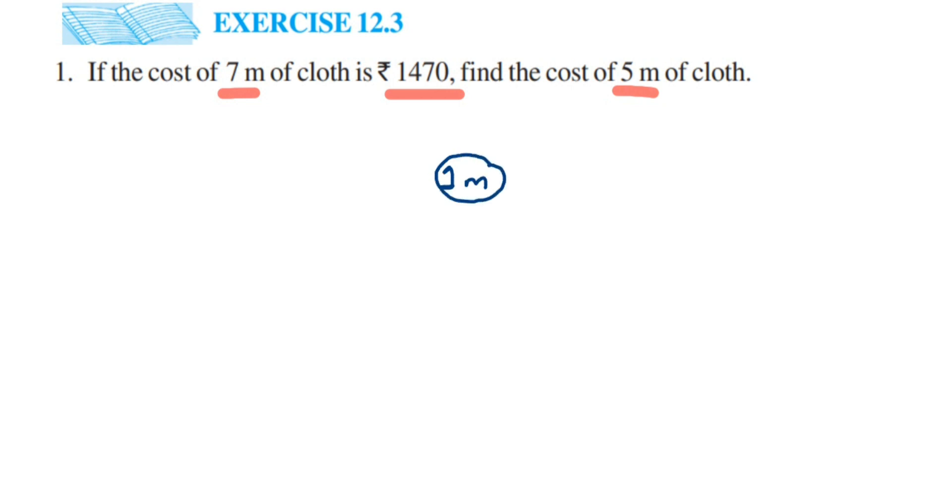Let me explain how to find that. I'm going to write down the statements. We know that 7 meters is equal to rupees 1470. Now I want 1 meter price.